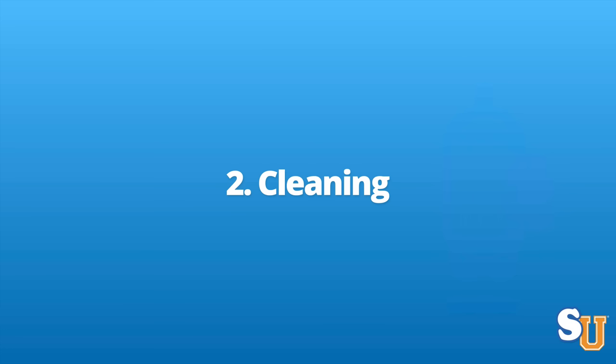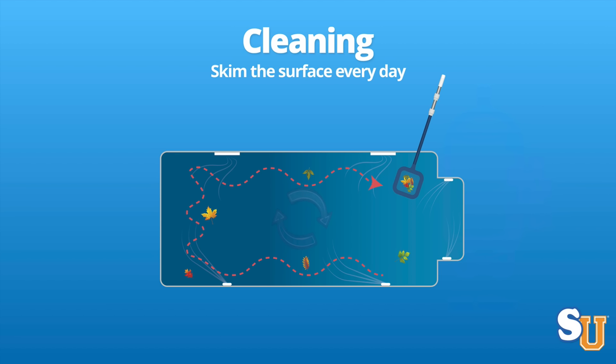Now we're going to talk about cleaning the actual pool itself. First, skimming. You have a leaf net attached to a pole and you want to skim the top of the pool every day. I know that may not be practical, but try. Consider it a break from your day — go outside, move the net around, pick up all the debris. This helps so much because debris that collects on top of the pool eventually ends up at the bottom, and then you have to vacuum it, which is much harder than just skimming.